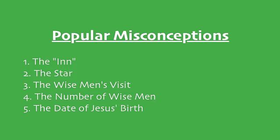The first question we have is: when did the star appear? The popular misconception — when do you see the star displayed? Christmas Eve. And when you set up your nativity, where's the star? Over the manger. The popular picture is that the star appears over the manger on the night of Jesus' birth. That's the popular misconception number two.